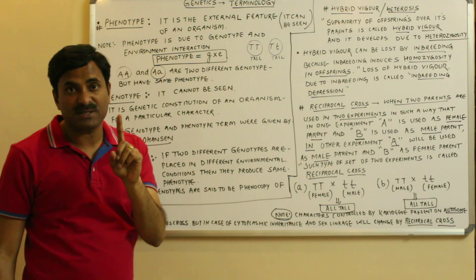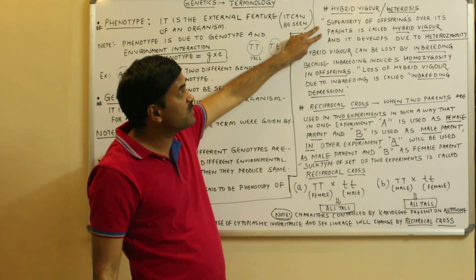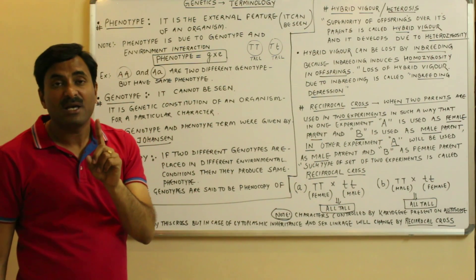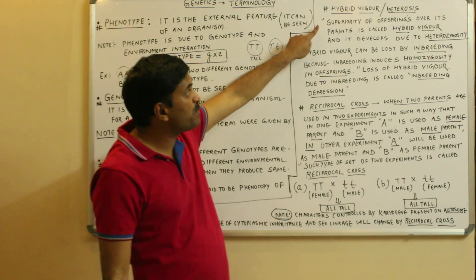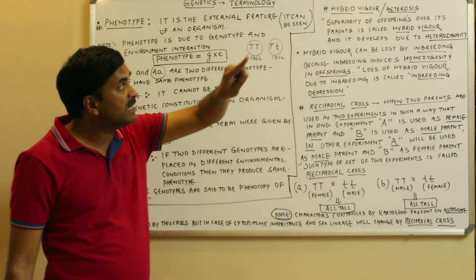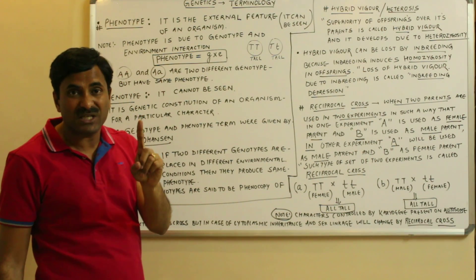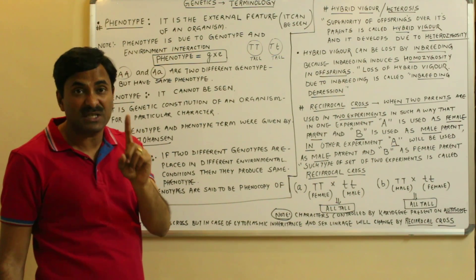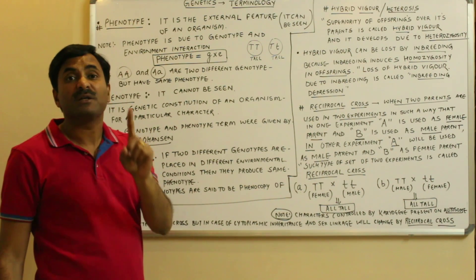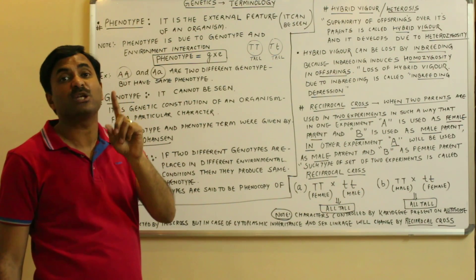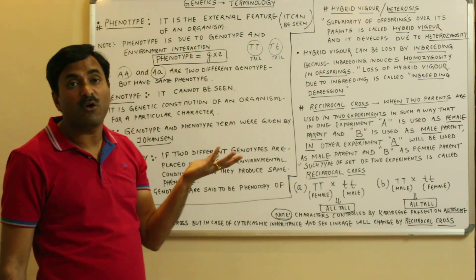Next is hybrid vigor, also called heterosis. The superiority of organisms or offspring over their parents is called hybrid vigor. Offspring are far more superior than the parents, and this superiority is called hybrid vigor. Always remember that hybrid vigor is produced due to heterozygosity, never due to homozygosity. Homozygosity will always cause inbreeding depression; to remove it, you must achieve heterozygosity.